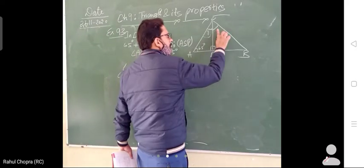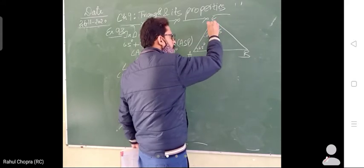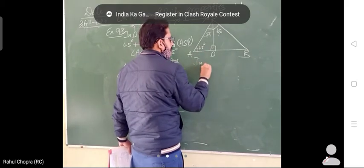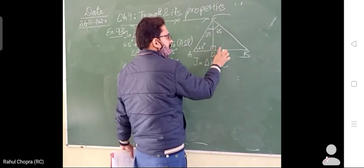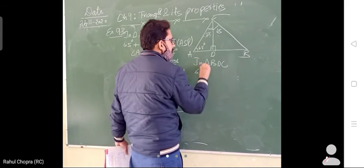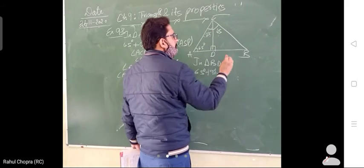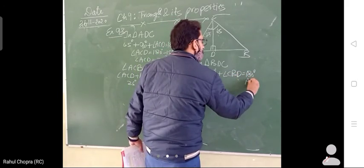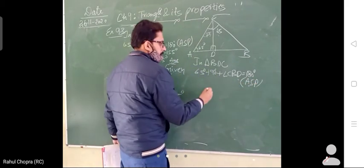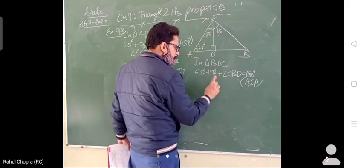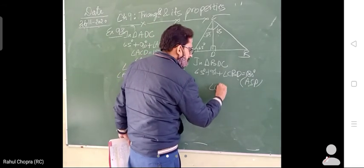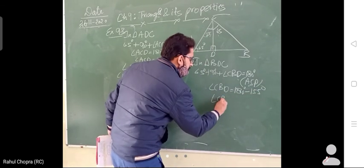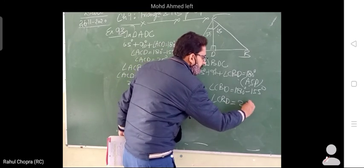Angle BCD is equal to 65 degrees. Now you have to find angle CBD. In triangle BDC, angle BDC plus angle BCD plus angle CBD is equal to 180 degrees because of the angle sum property. That gives angle CBD is equal to 155 degrees.